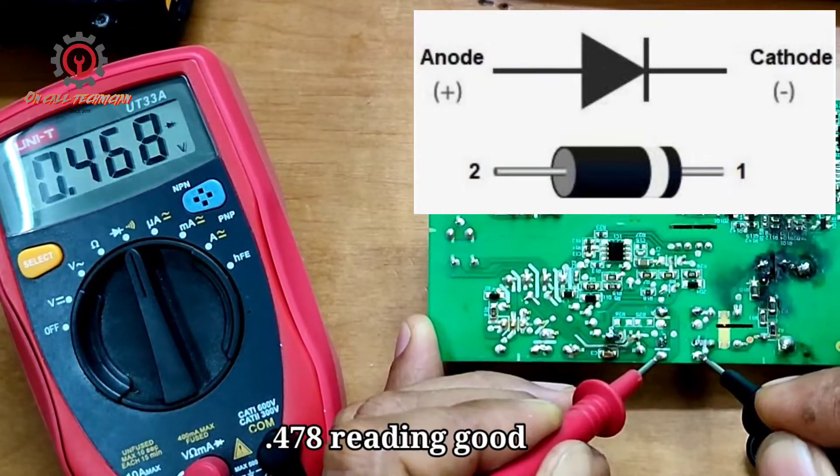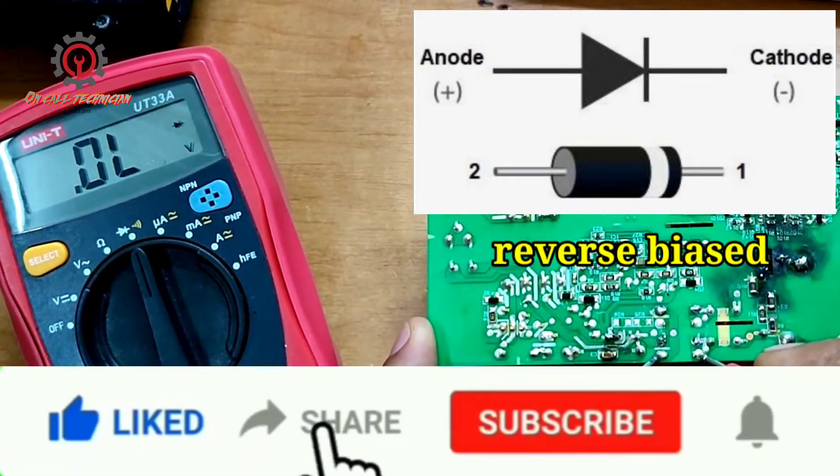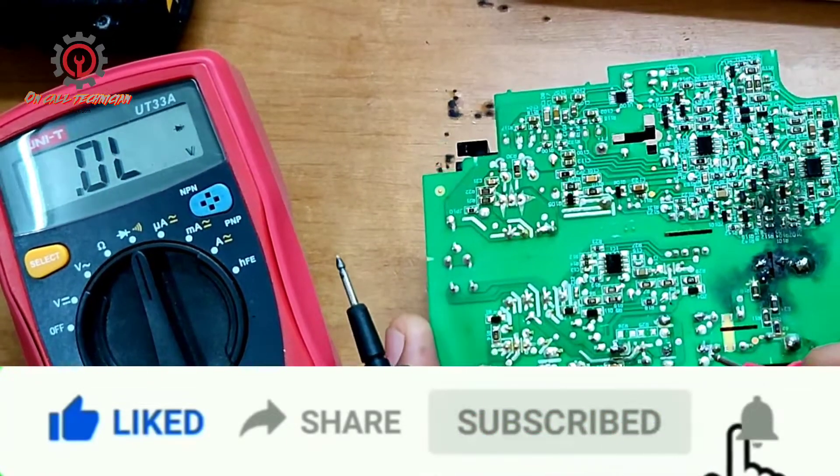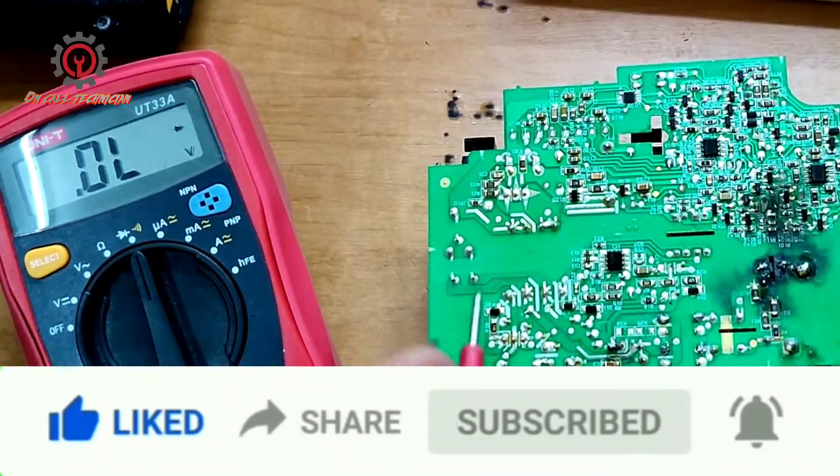Okay, this is a forward bias, and reverse bias there must be no reading. Okay, so we got two busted diodes here. That's why the fuse here is blown up. That's okay, thank you for joining us.